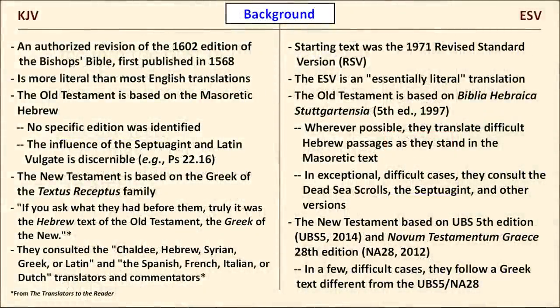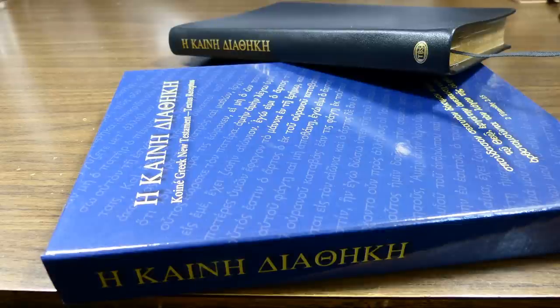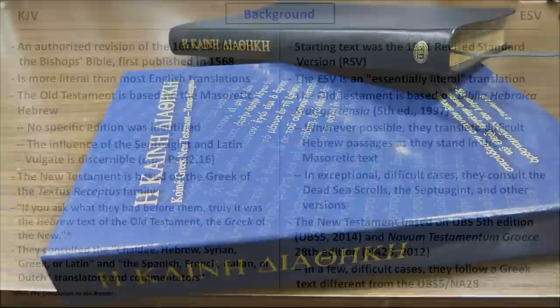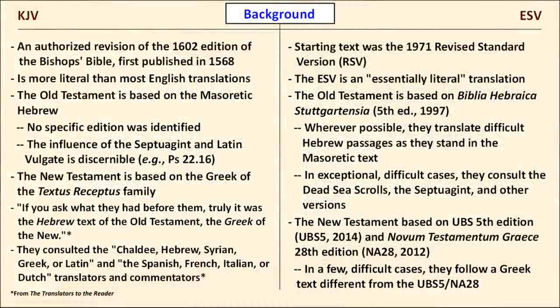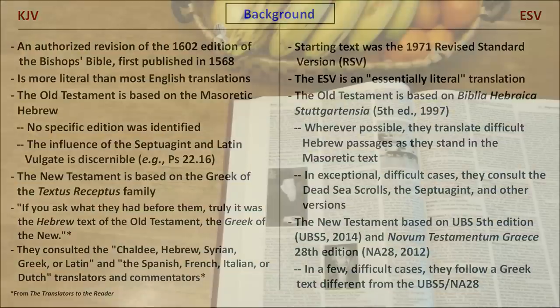The KJV's New Testament is based on the so-called Textus Receptus. The term Textus Receptus is used equivocally — sometimes it means the text received from the Eastern Roman Empire, and sometimes it means a series of printed editions of the Greek New Testament beginning with Erasmus' 1516 edition. In this video, I use the term in the latter sense. While the KJV New Testament is based on the Textus Receptus, it doesn't agree in all points with any edition of it, even with Scrivener's 1894 edition, which was created with that goal in mind.